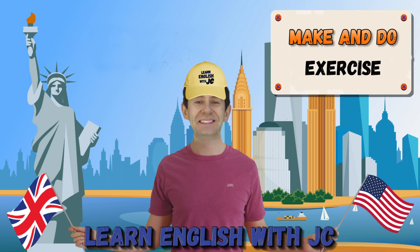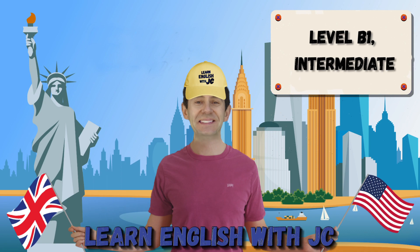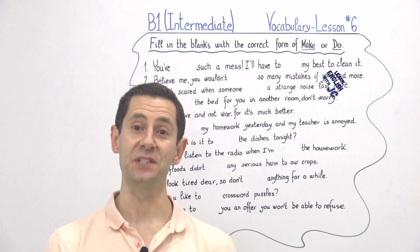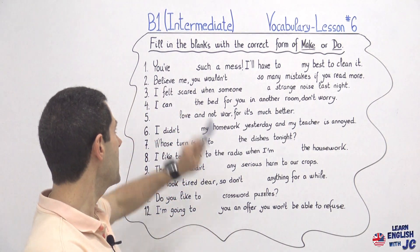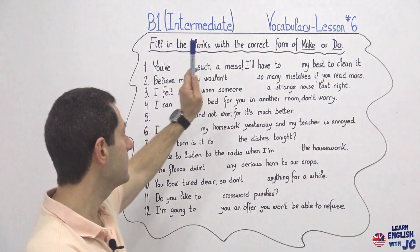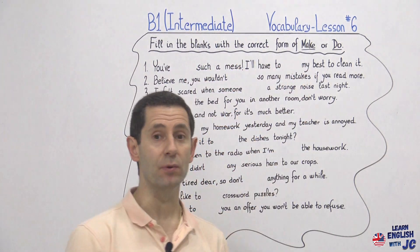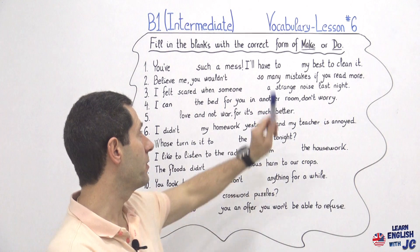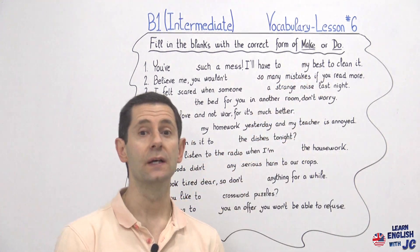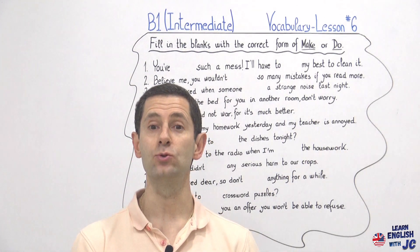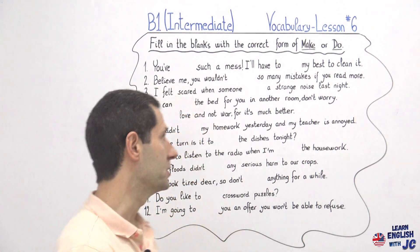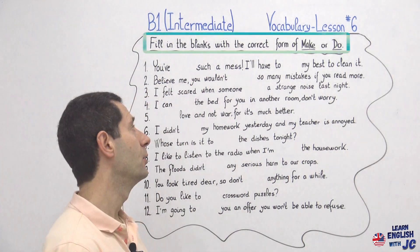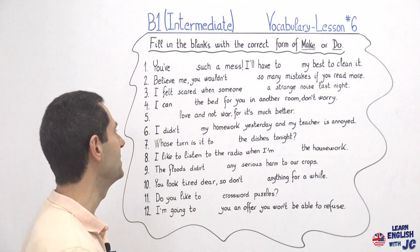In today's class: make and do exercise, level B1 intermediate. Hello folks and welcome to another video in our channel, Learn English with JC — that's me. Today's lesson has to do with level B1, which is intermediate vocabulary, lesson number six. It follows what we studied in lesson number five — the difference between make and do. In this lesson we are going to apply that knowledge, filling in the blanks with the correct form of make or do.